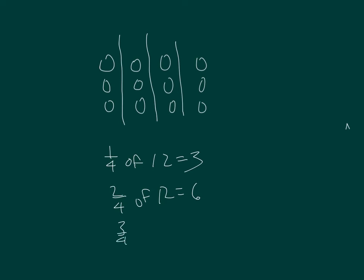3 fourths of 12 would be 9. 1 fourth, 2 fourths, 3 fourths, 9 counters.